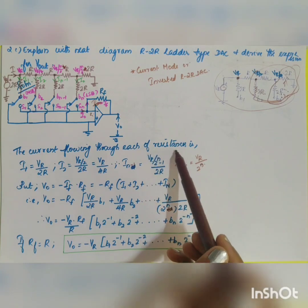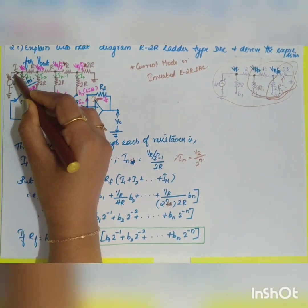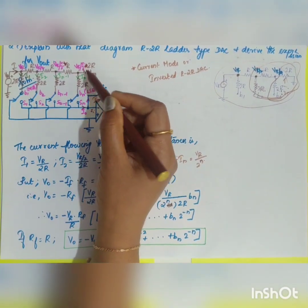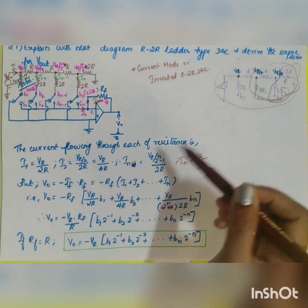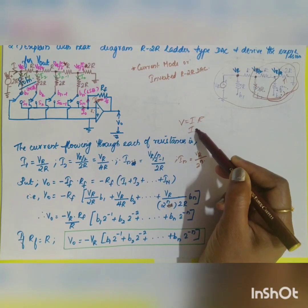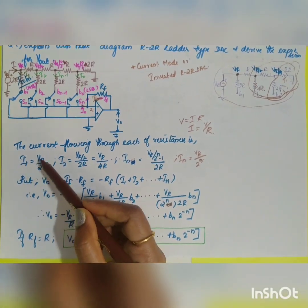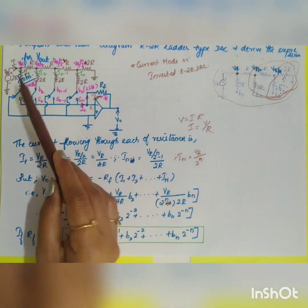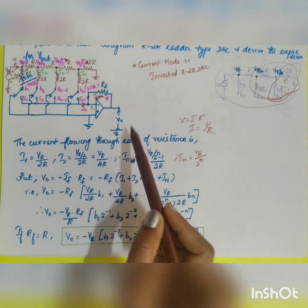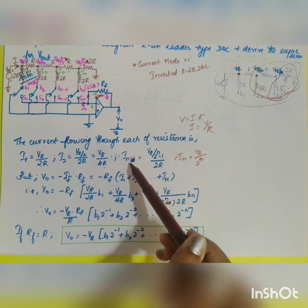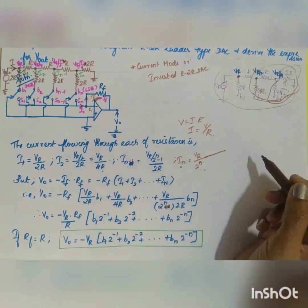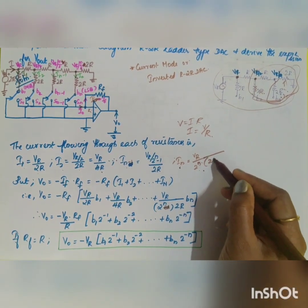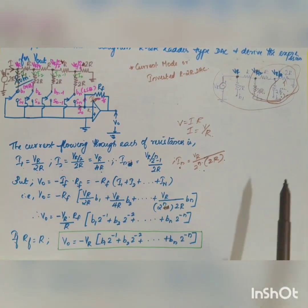Now, knowing the voltages, we can calculate the currents. Using V = IR, so I = V/R: I1 = VR/(2R); I2 = (VR/2)/(2R) = VR/(4R); and IN = VR/(2^N × 2R). These are the different current values flowing through each 2R resistor in the ladder.